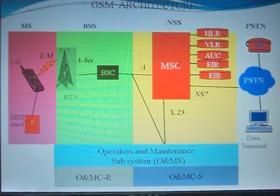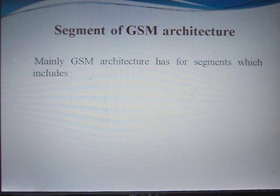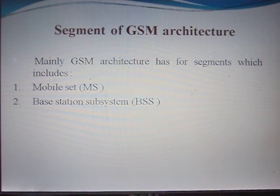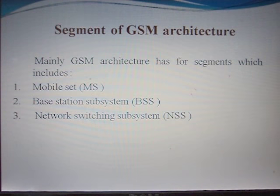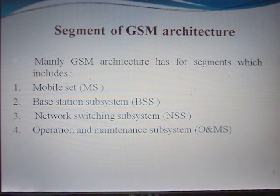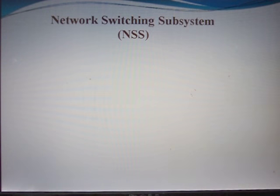GSM architecture is divided into four segments. The first segment is known as Mobile Set, the second is known as Base Station Subsystem, the third is known as Network Switching Subsystem, and the fourth is Operation and Maintenance Subsystem. In the previous lecture, we explained Mobile Set and Base Station Subsystem segments. Today, I am going to explain the Network Switching Subsystem.